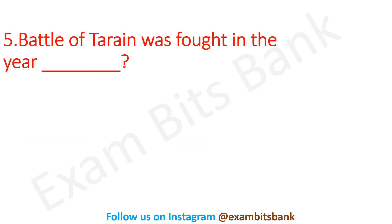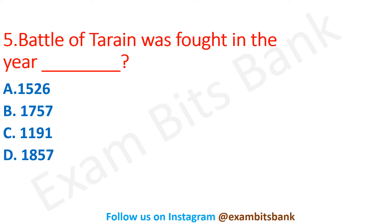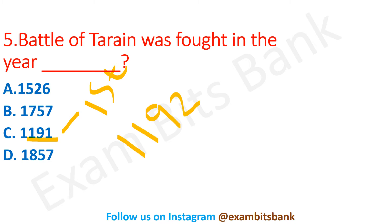Next question: The Battle of Tarain was fought in which year? Options are 1526, 1757, 1191, or 1857. The correct answer is option C — 1191. This was the first Battle of Tarain, fought between Mahmud Ghori and Prithviraj Chauhan, in which Ghori was defeated. The following year, 1192, was the second Battle of Tarain, in which Prithviraj Chauhan got defeated.